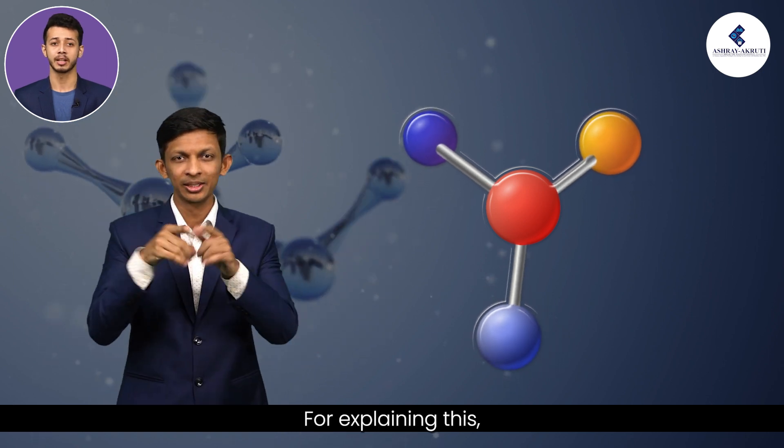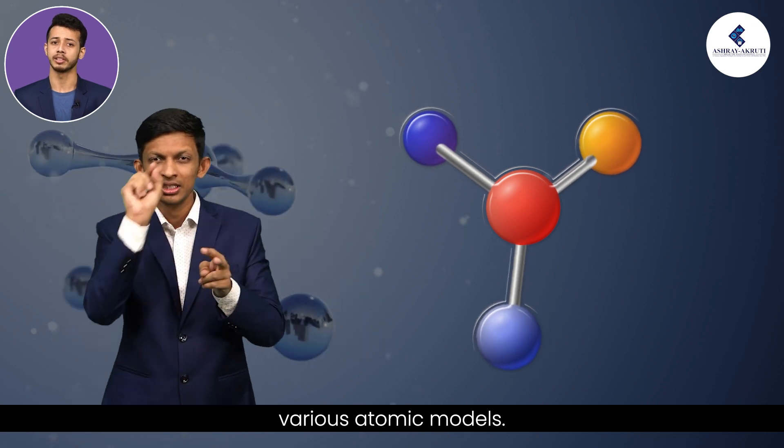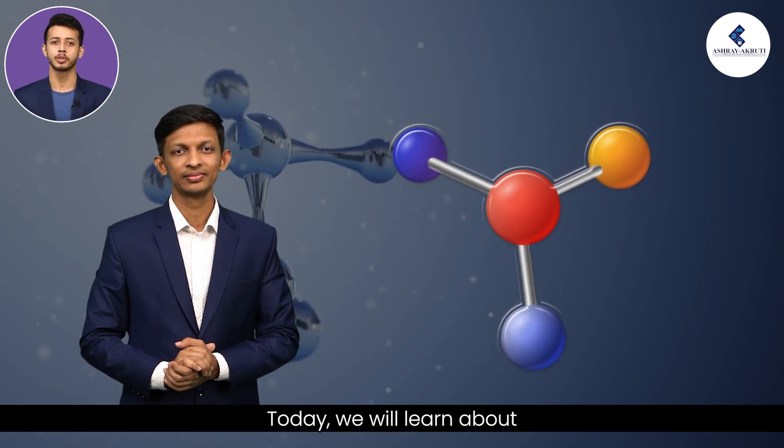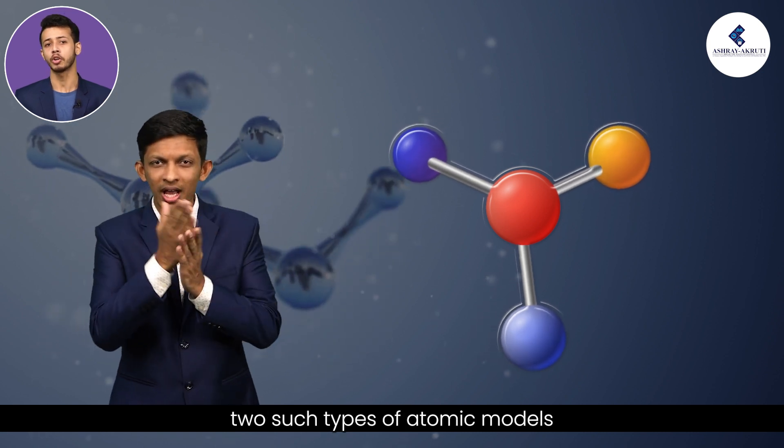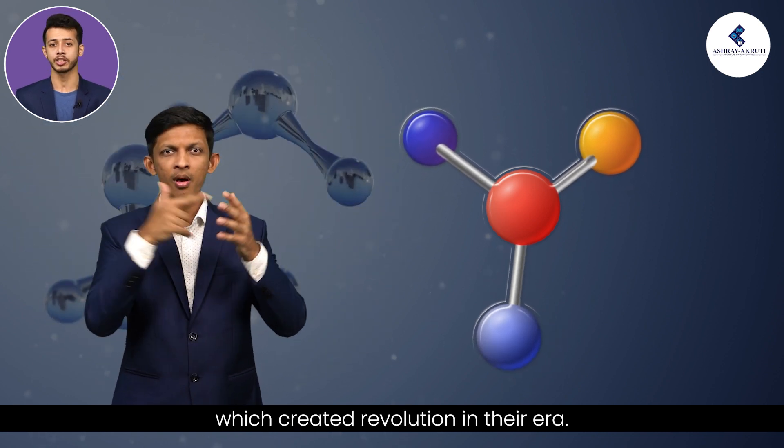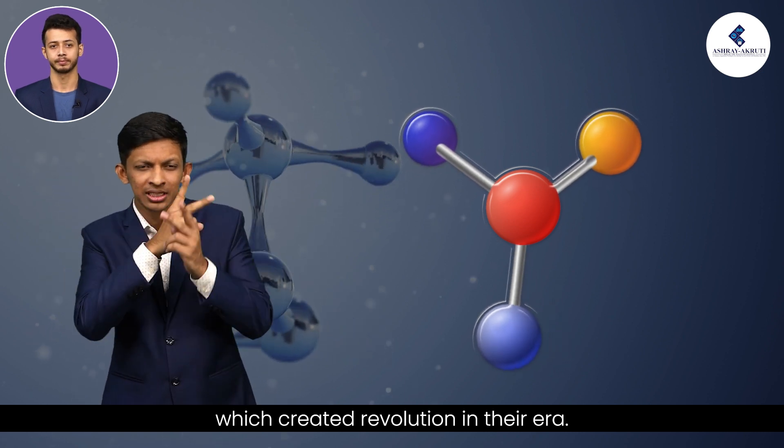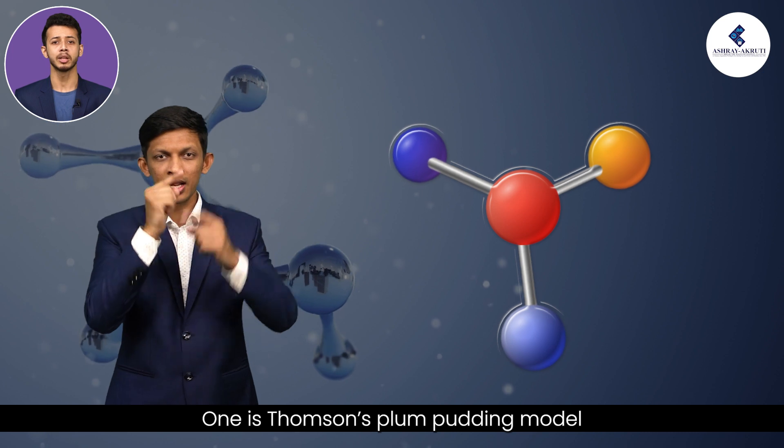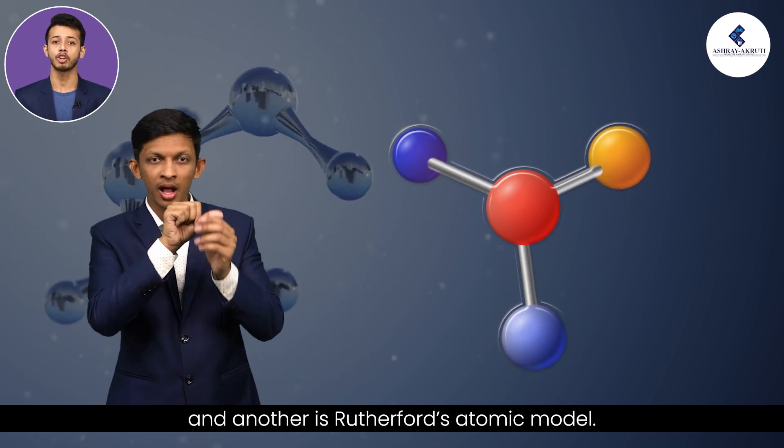For explaining this, many scientists have proposed various atomic models. Today, we will learn about two such types of atomic models which created revolution in their era. One is Thomson's plum pudding model and another is Rutherford's atomic model.